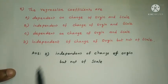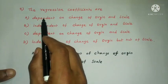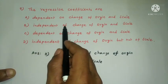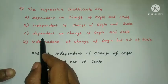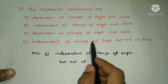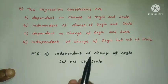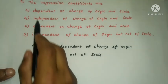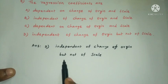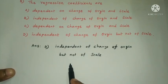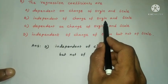Next question: The regression coefficients are — (A) dependent on change of origin and scale, (B) independent of change of origin and scale, (C) dependent on change of origin and scale, (D) independent of change of origin but not of scale. The answer is Option D: regression coefficients are independent of change of origin but not of scale. Note: the correlation coefficient is independent of both change of origin and scale.